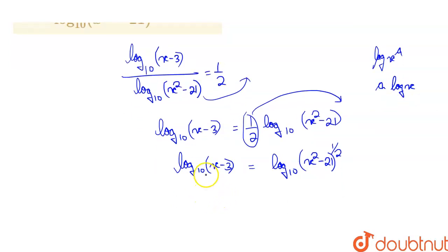Now, log a equals log b means simply a equals b. That is x minus 3 equals x squared minus 21 to the power 1 by 2. And x squared minus 21 to the power 1 by 2 is under root of x squared minus 21.